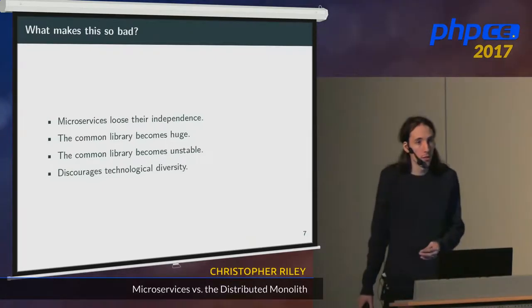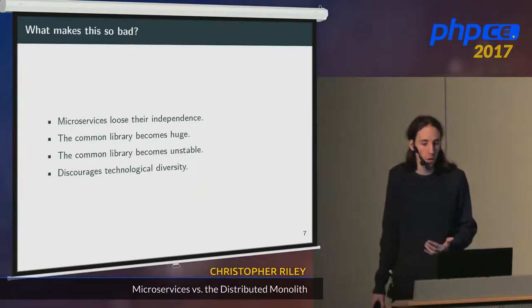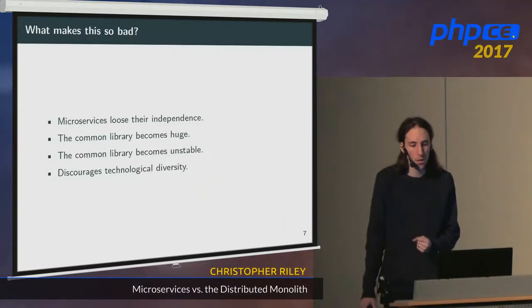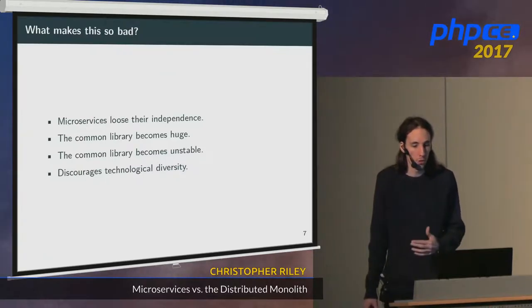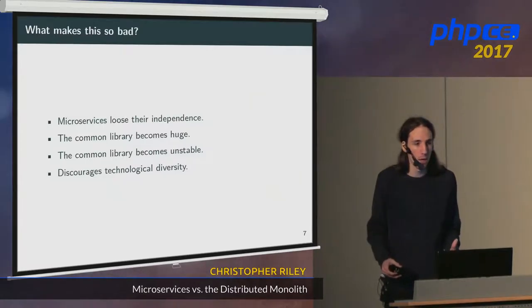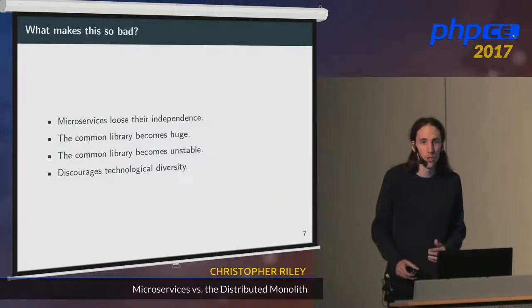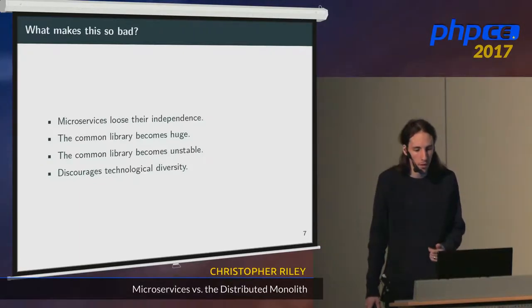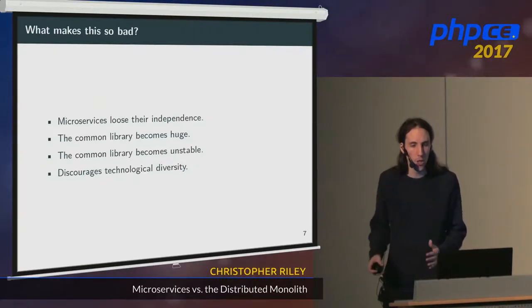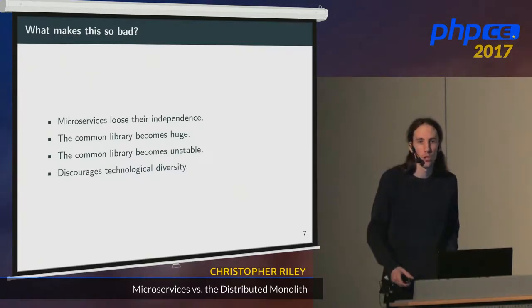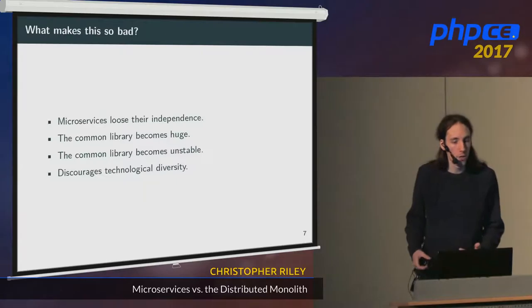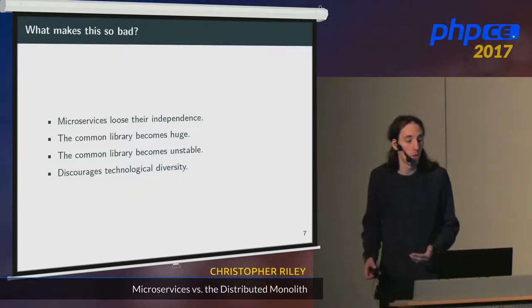The common library also discourages technological diversity. Once you've built up this huge library of code on which all your microservices are based, the perceived cost of bringing in a new language or even a different framework looks huge — you're looking at that code base thinking if I wanted to write a service in Java I'd have to rewrite that entire common library. That's kind of a false impression because probably you only need one or two of the functions in that common library, but it acts as an artificial barrier to adopting new technology.